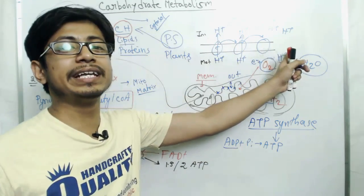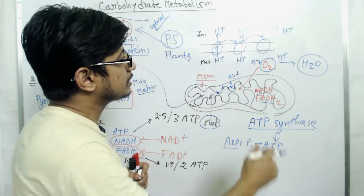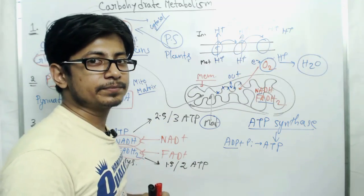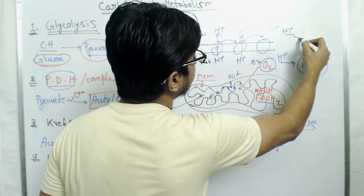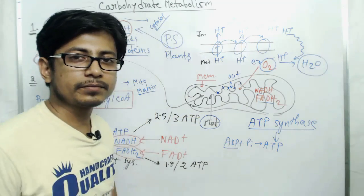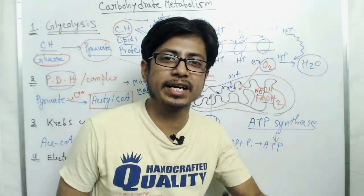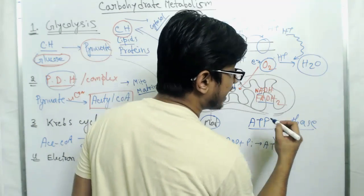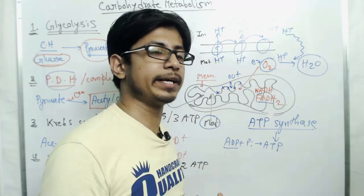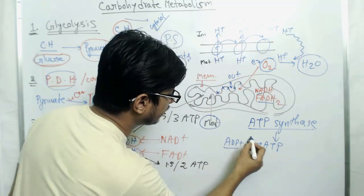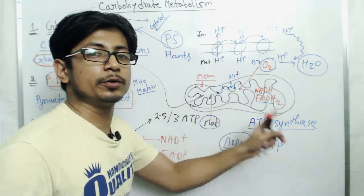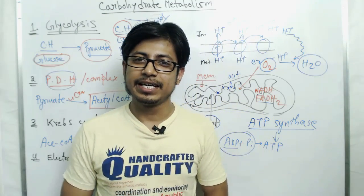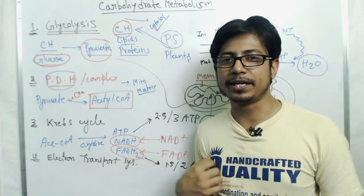Once this proton gradient is formed, we utilize it. Protons start flowing back into the matrix, causing the ATP synthase enzyme to rotate and add inorganic phosphate to ADP to make ATP. That is how we generate energy at the end of the electron transport chain.